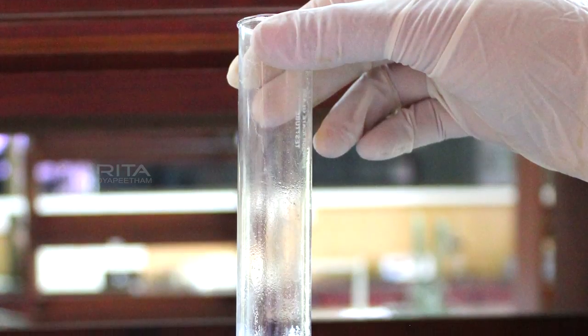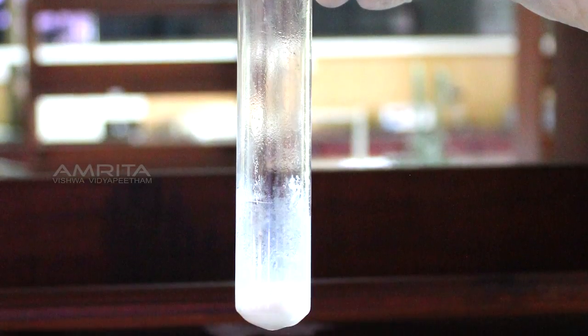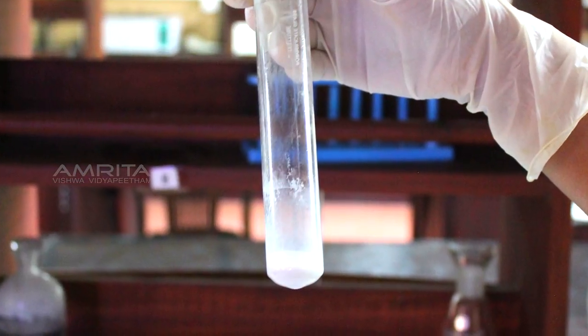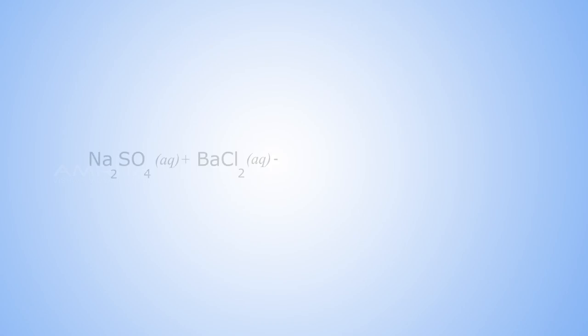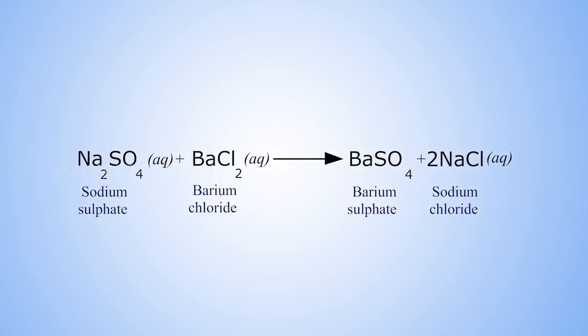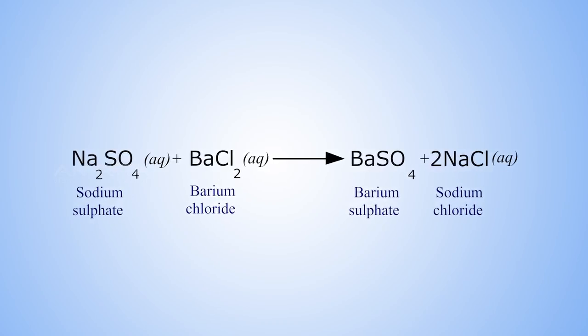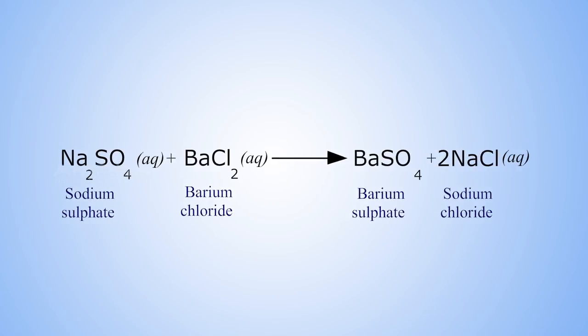Here, a chemical reaction occurs between sodium sulphate and barium chloride to form barium sulphate and sodium chloride. This is a double displacement reaction in which sulphate ions are displaced by chloride ions and chloride ions are displaced by sulphate ions.